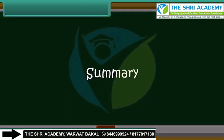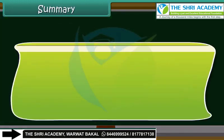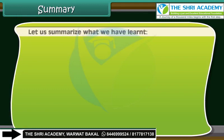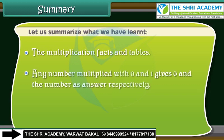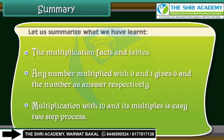Summary: Let us summarize what we have learned — the multiplication facts and tables. Any number multiplied by 0 gives 0, and multiplied by 1 gives the number itself. Multiplication with 10 and its multiples is an easy two-step process.